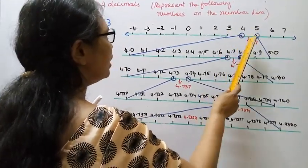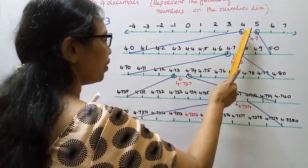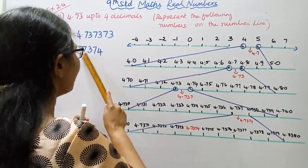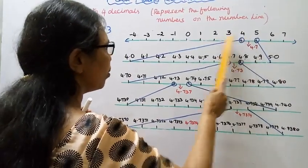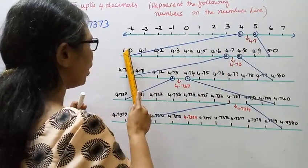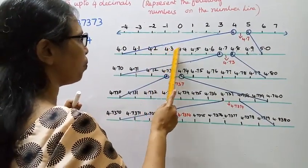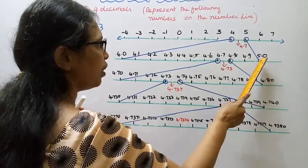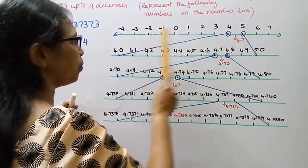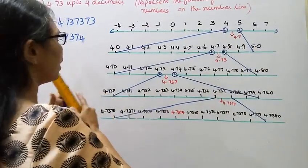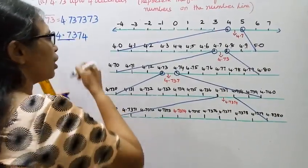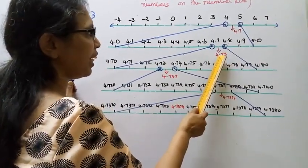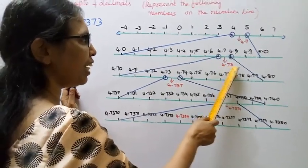Now in this problem, 4.73. 4.0, 4.1, 4.2, 4.3, 4.4, 4.5, 4.6, 4.7, 4.8, 4.9, 5.0. 4.73 will go between 4.7 and 4.8.